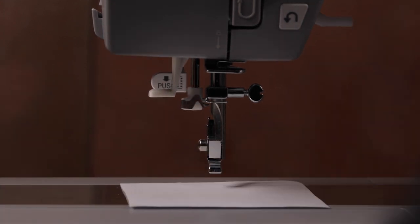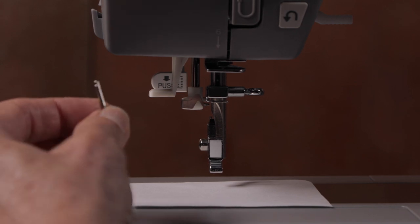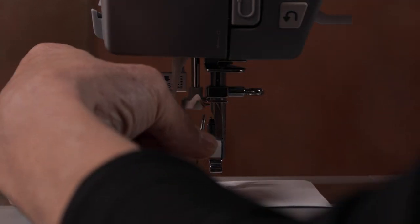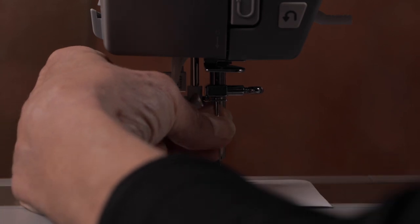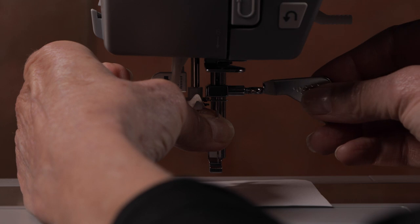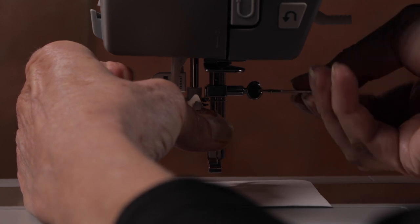Take your new needle with the flat side toward the back and place it up into the needle clamp, making sure it's up as far as it will go. Use your machine's screwdriver to tighten the needle clamp screw securely.